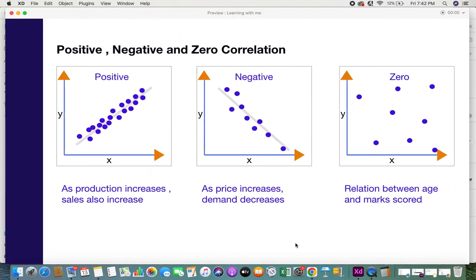There are many types of correlations, but in this video I'm focusing on positive, negative, and zero correlation. Let's take the first one: when can we say that there is positive correlation between two variables?